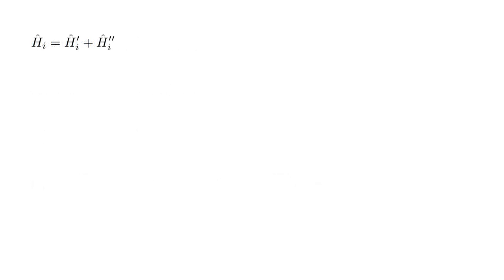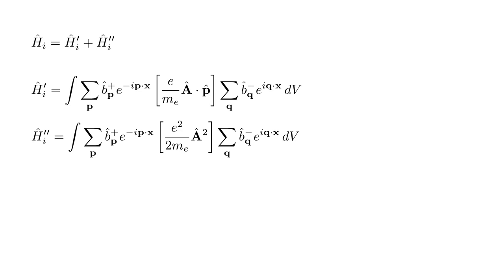As we have seen before, the non-relativistic interaction Hamiltonian has two terms, h-hat i-prime and double-prime. The first contains a product between the electromagnetic field operator a-hat and the momentum operator p-hat, while the second has the product of a-hat with itself. A-hat contains a sum over all photon states of destruction and creation operator terms. Therefore, h-hat i-prime can create or destroy a single photon.